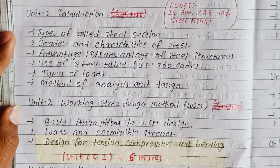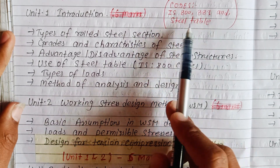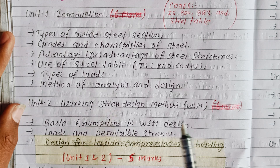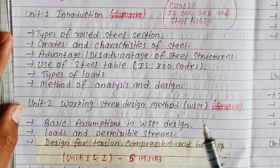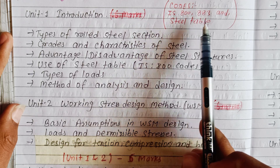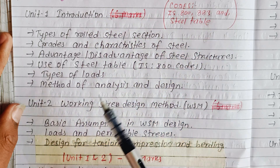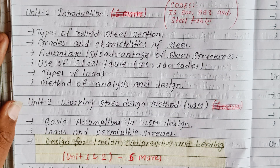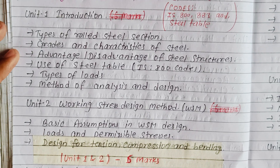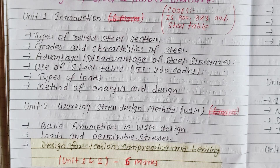The reference codes for this subject are IS 800 — the steel code — and IS 883 — the timber code — along with the steel table. These will be provided as PDFs, and you can download them. A PDF link will be posted in the video comment box.